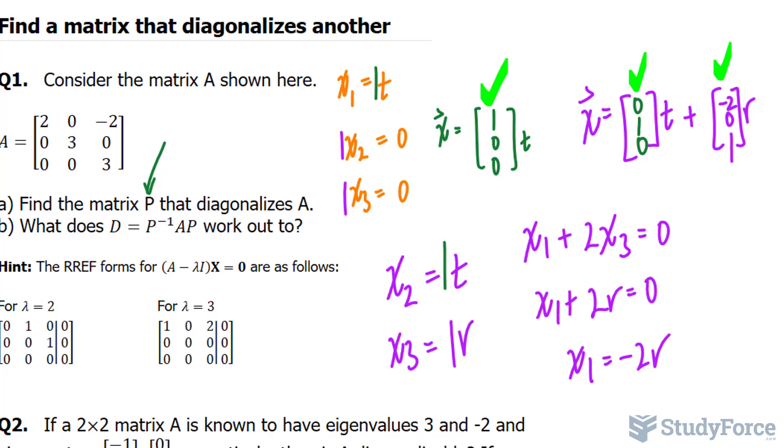If we combine them all together, we will create a matrix P. In order of the eigenvalues, when the eigenvalue was 2, we got this, so I'll write that first: 1, 0, and 0. For x sub 2, we use t, so we look at 0, 1, and 0. And for x sub 3, we set it as r, and that happened to be negative 2, 0, and 1. So this P matrix is what diagonalizes A.